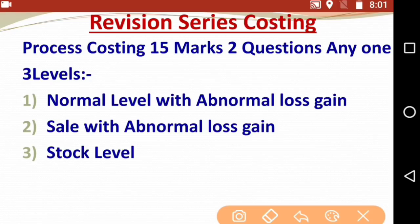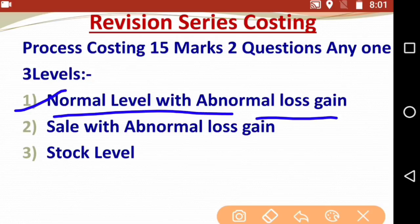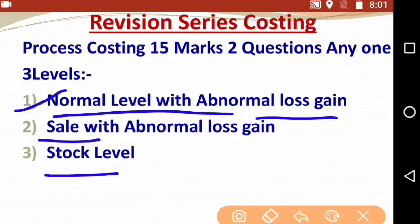We have to discuss the levels that are very important from an exam-oriented perspective. The first level is the normal level, where you calculate abnormal loss or abnormal gain — very simple. The second is the sale level, where you have sold and transferred, like two points. The third is the stock level, where you need three processes, so three multiplied by two means six ledgers — three process accounts and three stock accounts.